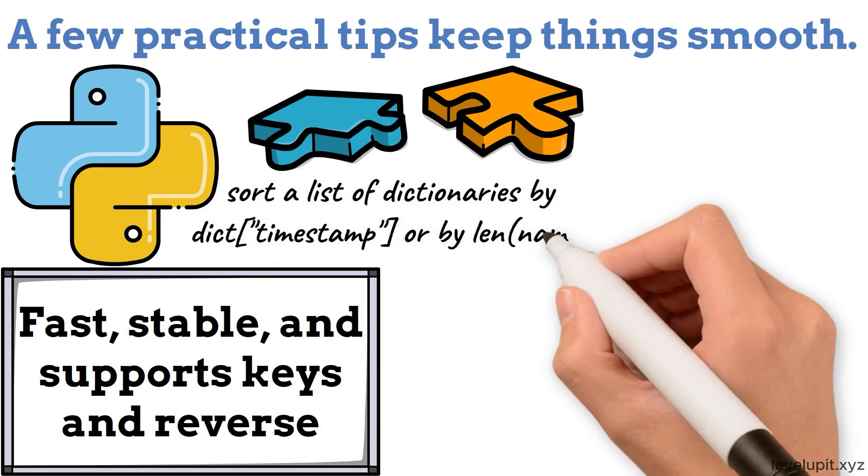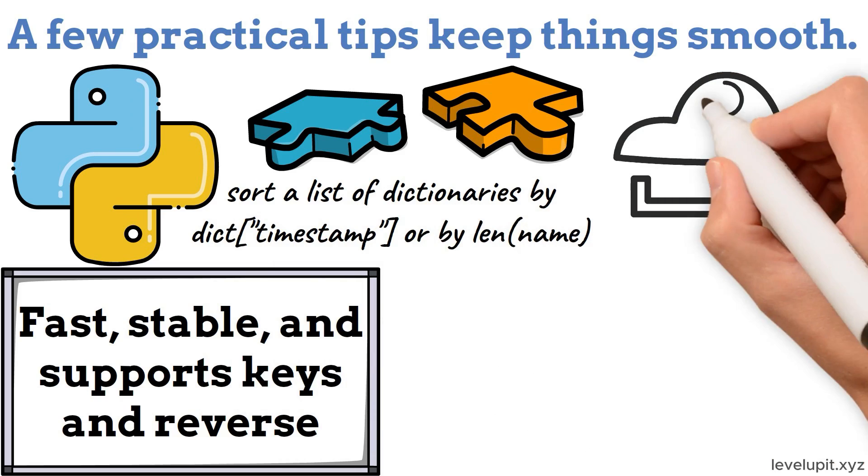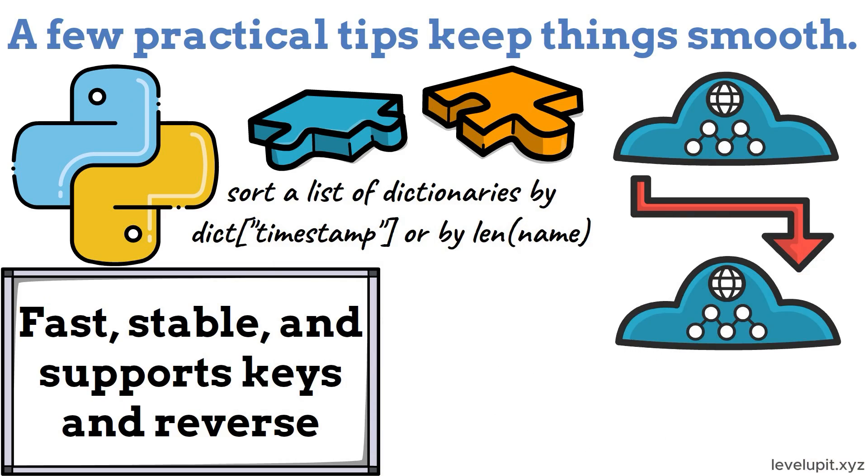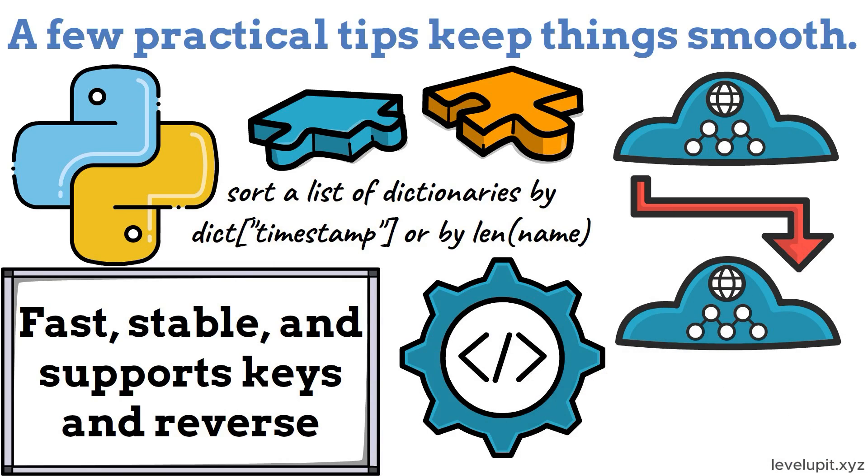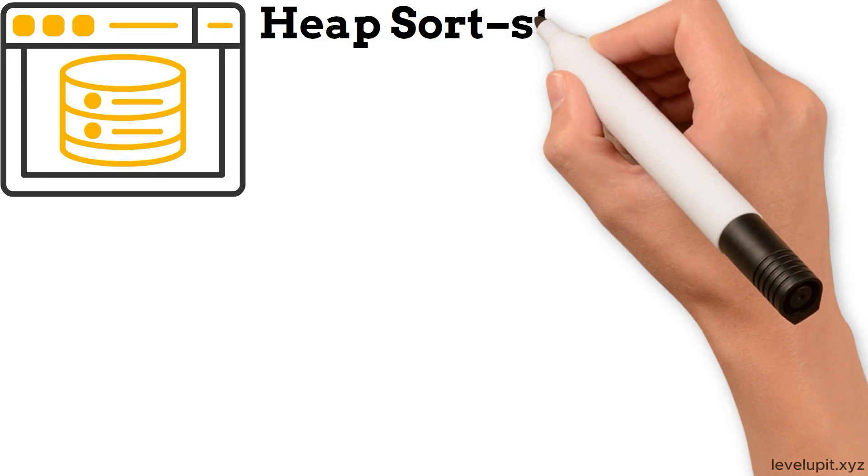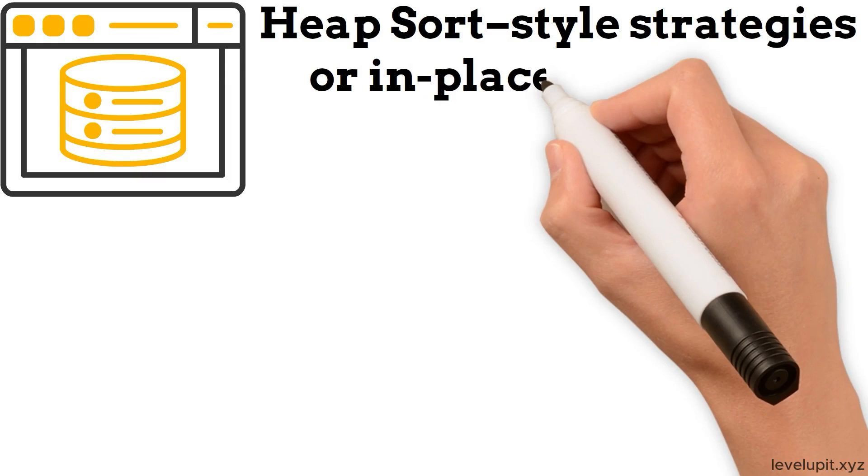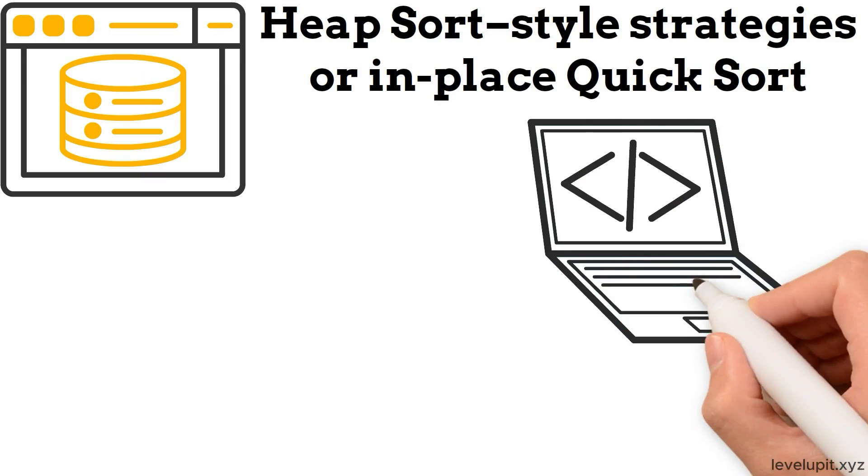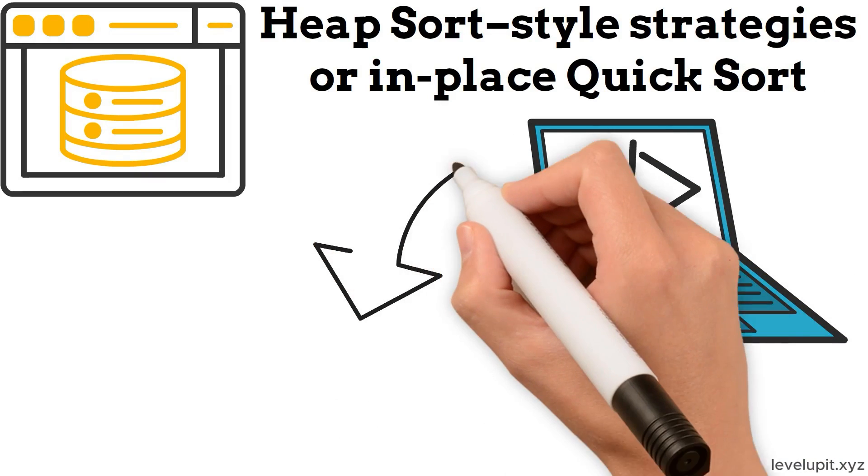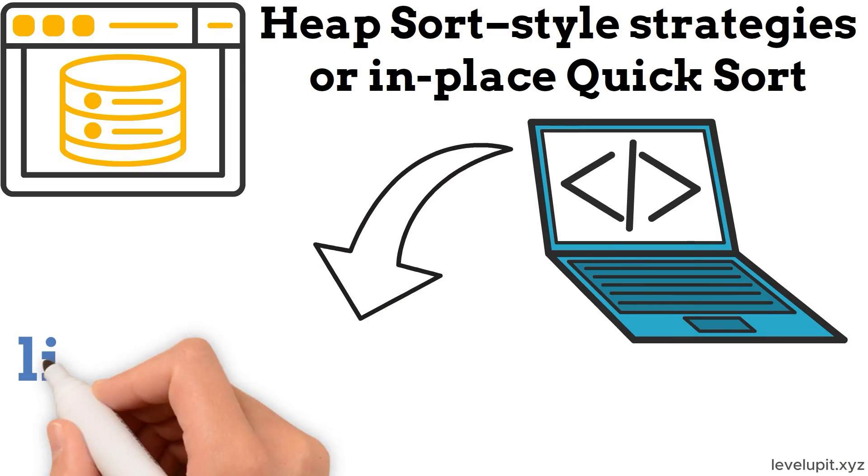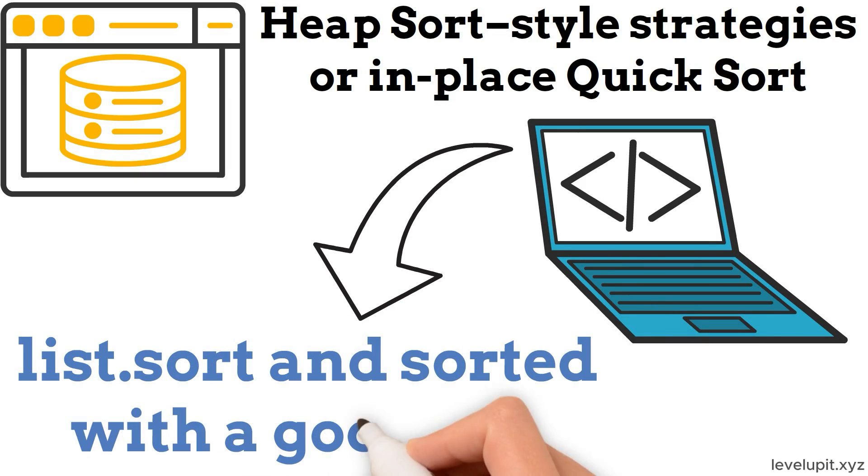If data is nearly sorted, inserting into place works surprisingly well, especially for small updates. When memory is tight and worst-case guarantees matter, heap sort-style strategies or in-place quicksort implementations reduce overhead. But again, in everyday code, list.sort and sorted with a good key solve most problems cleanly.